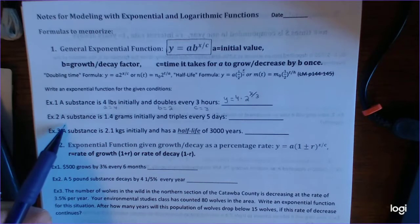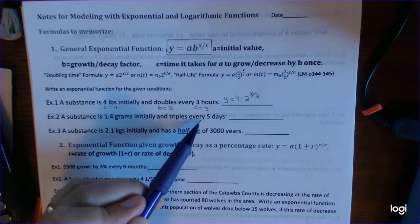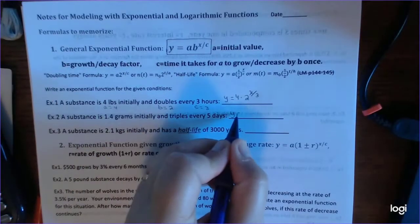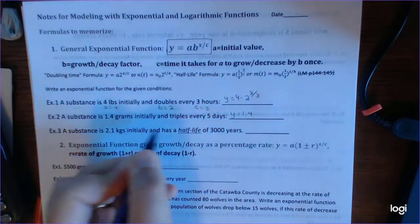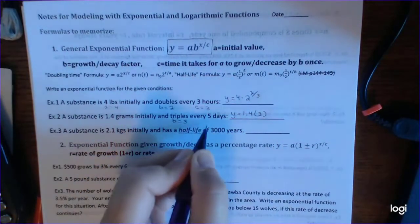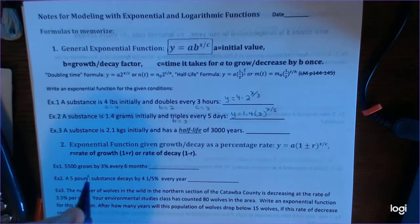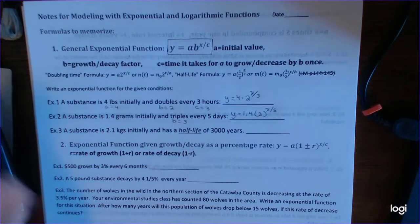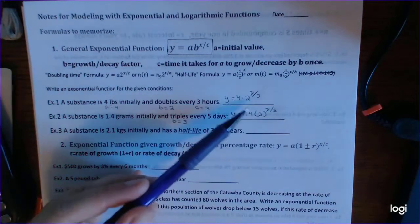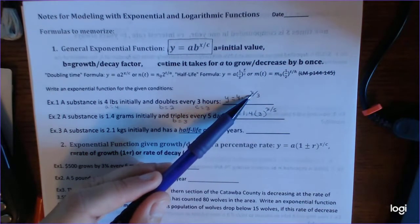Take a look at the second example. A substance is 1.4 grams initially and triples every 5 days. So that would be Y equals our initial value 1.4. Triples means B is going to be 3. You're going to multiply by 3, but you can't multiply by 3 until 5 days have passed. Now look at those two functions, and I will tell you that something is missing. I kind of forgot to do it with the first one, but it's actually good that I did.